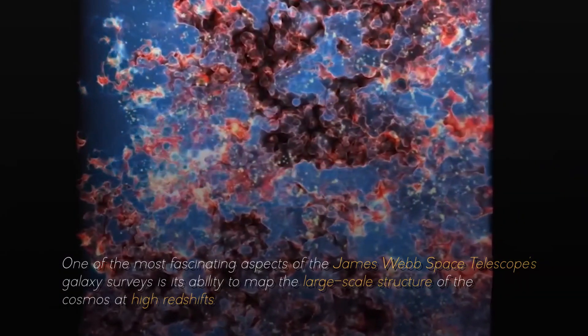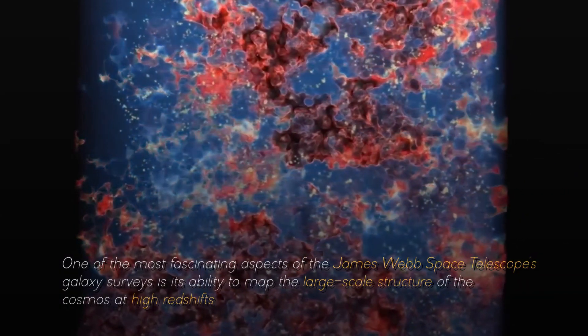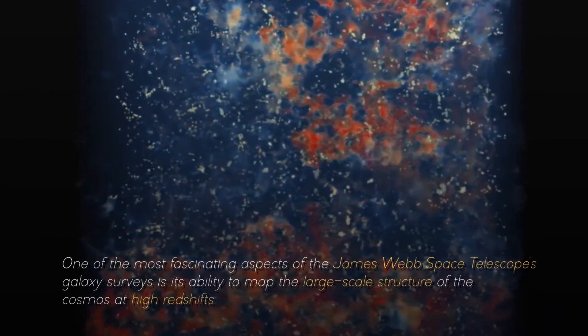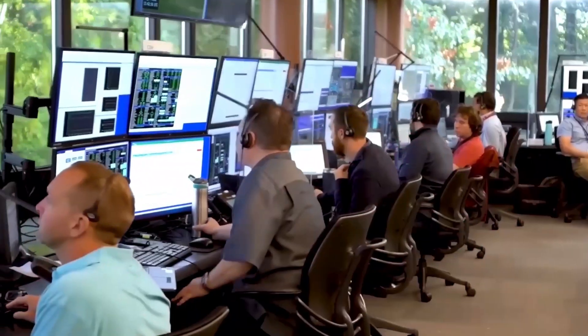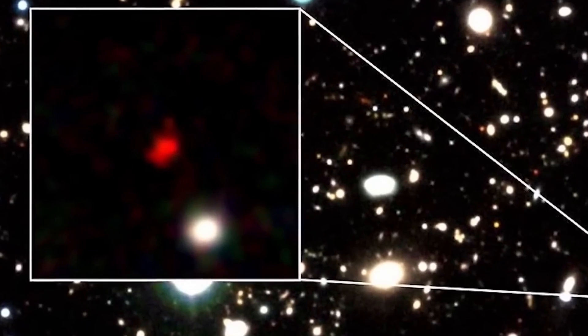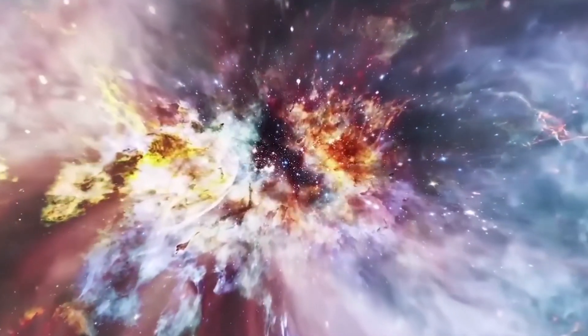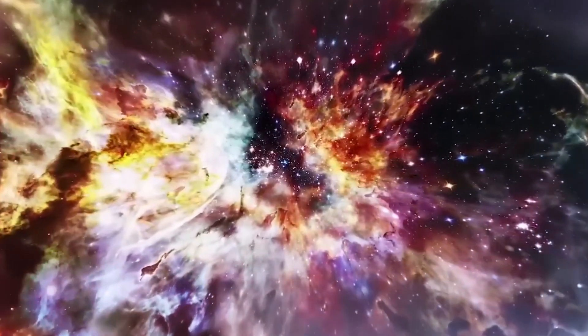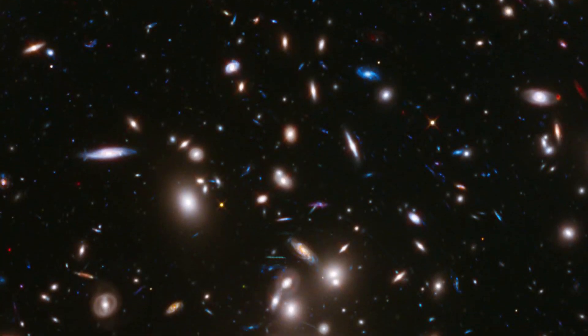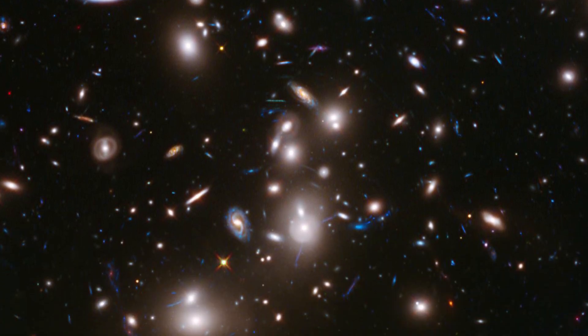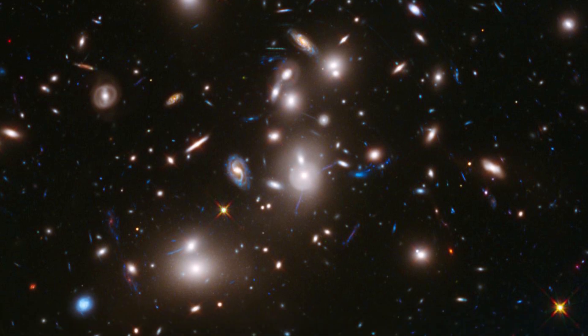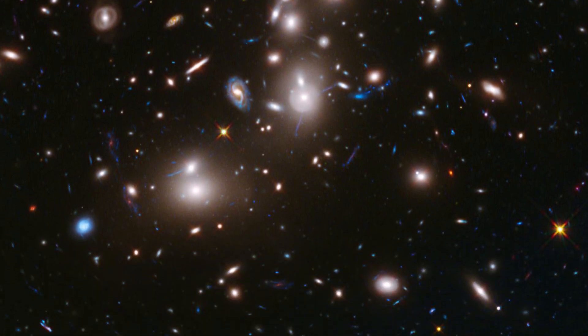One of the most fascinating aspects of the James Webb Space Telescope's galaxy survey is its ability to map the large-scale structure of the cosmos at high redshifts, when galaxies were still young and grouped into large clusters known as protoclusters. These protoclusters are the predecessors of today's galaxy clusters, which are the largest gravitational structures in the universe. By studying these protoclusters, we can learn about the interactions between galaxies, their interactions with their surroundings, their growth and merger, and how they influence the formation of stars and planets.